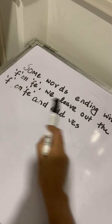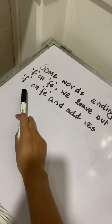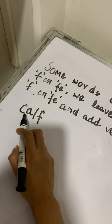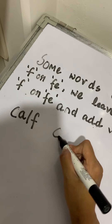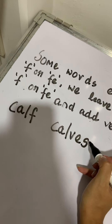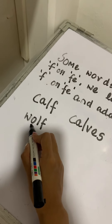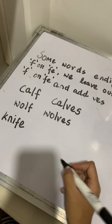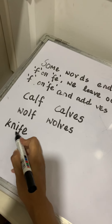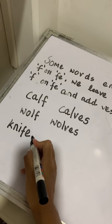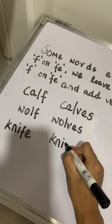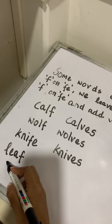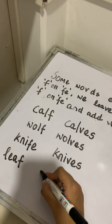For some words ending with F or FE, we leave out the F or FE and we add VES. For example, calf — C-A-F — will become C-A-V-E-S, caves. Next, we have wolf. We drop the F and wolf will become wolves. Next, we have knife — it ends with FE. We drop the FE and knife will become knives. Next, we have leaf. We drop the F and add VES, so leaf will become leaves.